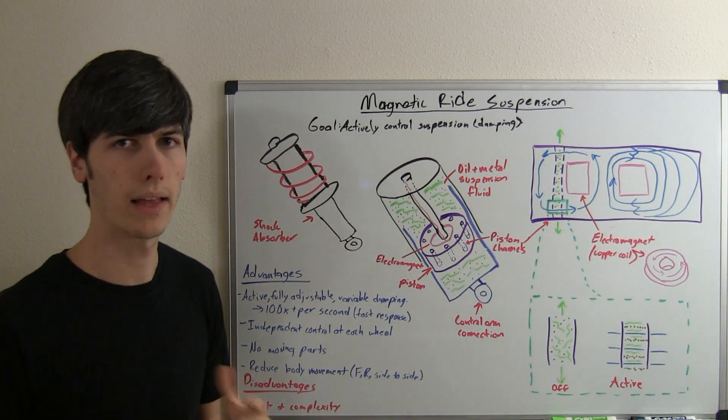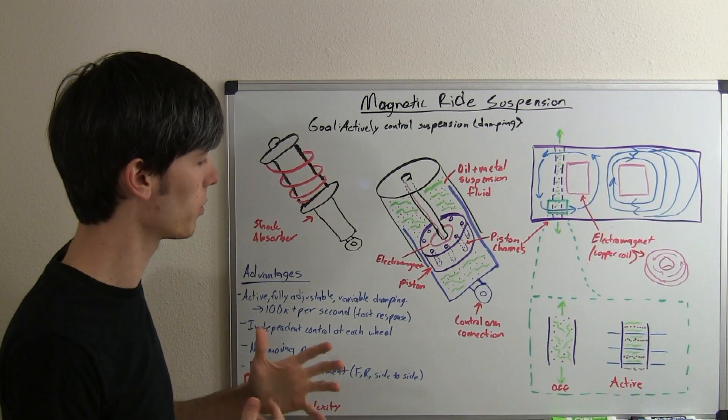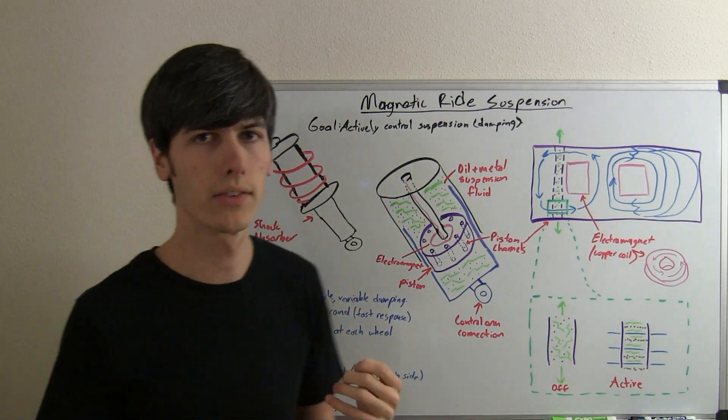So, why would you want a system like that? What are the advantages of it? Well, it's active, fully adjustable, variable damping. So, you can actively control the damping that your car has.